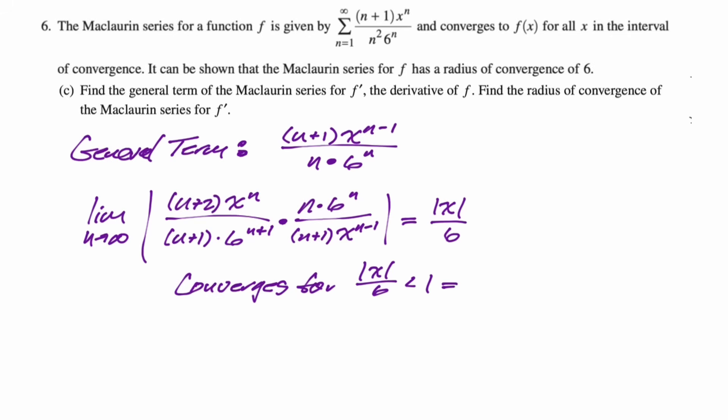This is definitely going to converge when the absolute value of x/6 is less than 1. So we know that's true, which means it converges when the absolute value of x is less than 6, which means we have to state what the radius of convergence is. So we did all this work, and at the end, you have to actually say the radius of convergence is 6. Let's take a look at the last part of this thing.